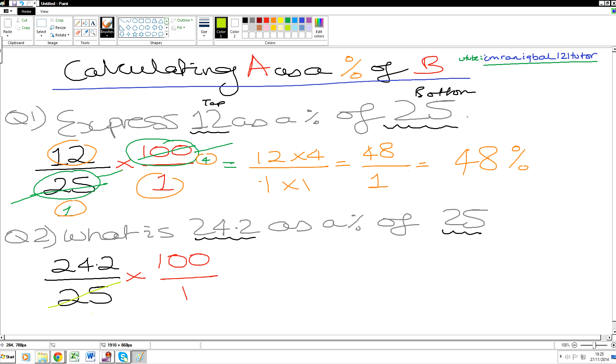Now the canceling is going to be the same as before. So 25 divided by 25 is 1, 100 divided by 25 is 4. Here comes the only difference: now 24.2 and 1 cannot be canceled, so we're left with this.